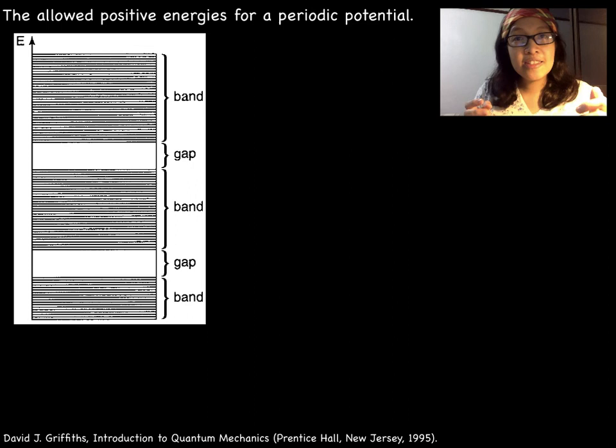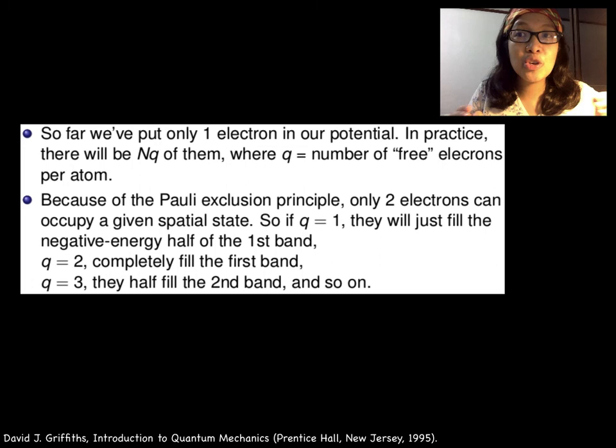The lines are closely spaced. We can regard them as forming a continuum, as indicated in this figure. So far, we only place a single electron in our potential. In practice, there will be Nq of them, where q is the number of free electrons for each atom.